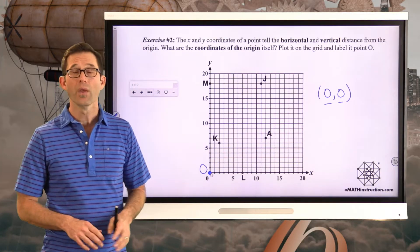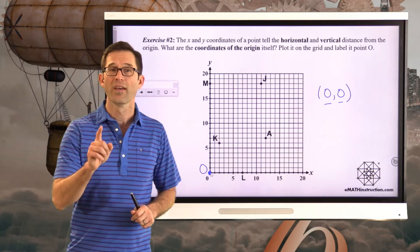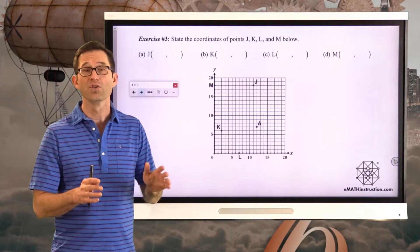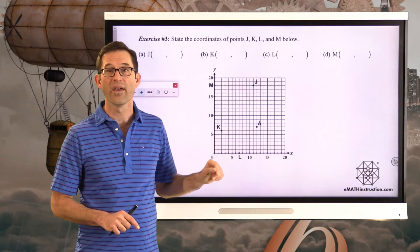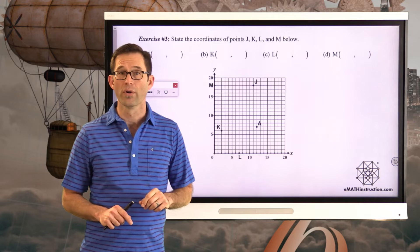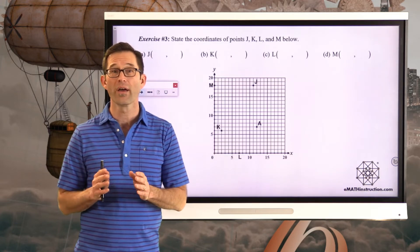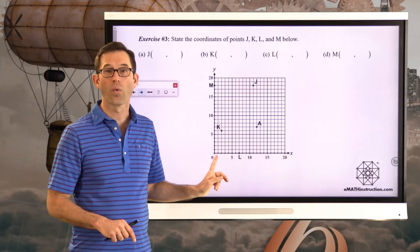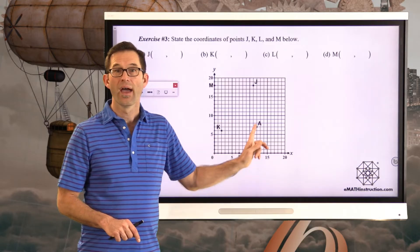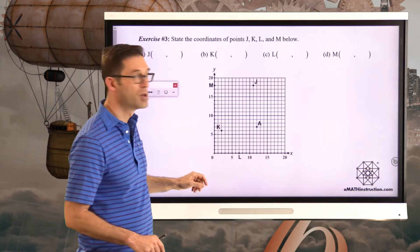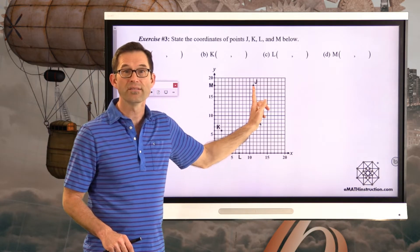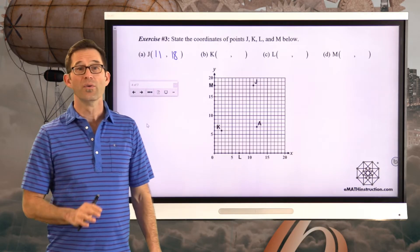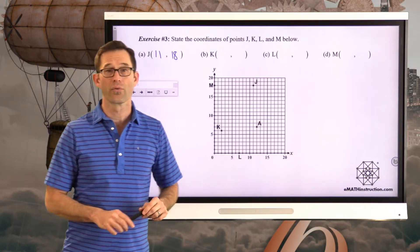The last thing we should already be able to do is take points already plotted in the plane and come up with their coordinates. In exercise three, I've got points J, K, L, and M. For J, starting at the origin, I go 11 units to the right and 18 units up, so J has coordinates 11 comma 18. Pause the video now and try to come up with the coordinates for the other three points.